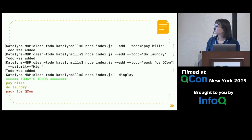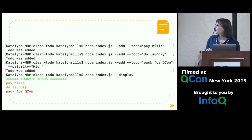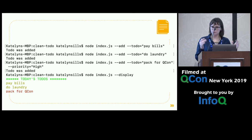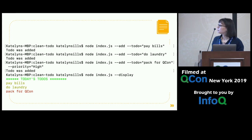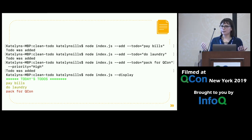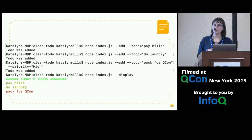Here's an example of how you might use it. First, add a to-do: 'pay bills.' Then add 'do laundry.' And add 'pack for QCon' — priority high because it's really important. When we display it through chalk, we see 'pay bills,' 'do laundry,' and 'pack for QCon' in red because it's really important.